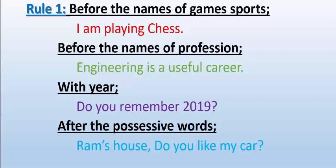For example, 'Ram's house' — here 'Ram's' is a possessive word; apostrophe S is added to the noun, so this house belongs to Ram. Another example: 'Do you like my car?' Here the word 'my' indicates possession — it is a possessive adjective. So when a possessive word is used before any noun, we don't use any article before that noun.